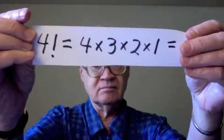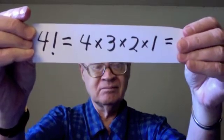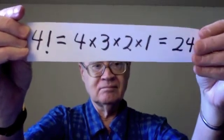This is about the notation of a counting number followed by an exclamation mark, such as this. It's called four factorial. It means four times three times two times one — you count from the given number down to one and multiply. Four factorial turns out to be equal to 24.